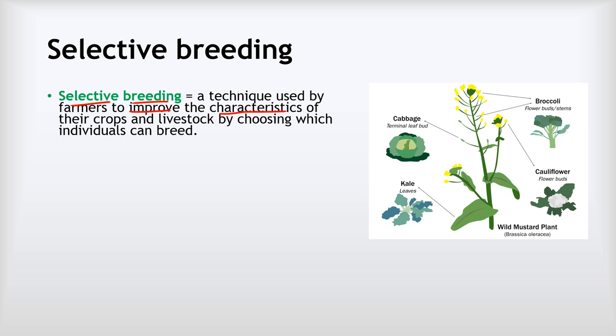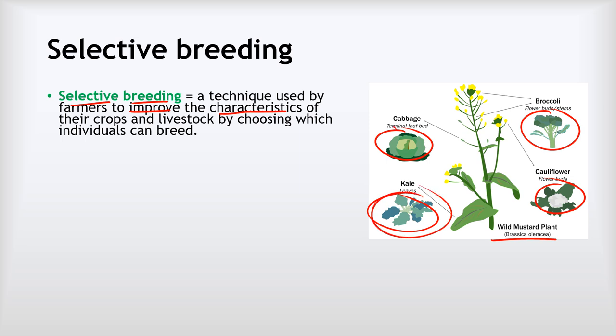An example of that is this. You have probably at some point eaten cabbage, broccoli, cauliflower, or kale. All of those four different vegetables may seem very different but they've all come from the same wild plant called wild mustard. That wild mustard has been shaped over many generations of selective breeding into each of these four very different vegetables. Brussels sprouts is another example of a vegetable that's come from this same wild mustard plant.